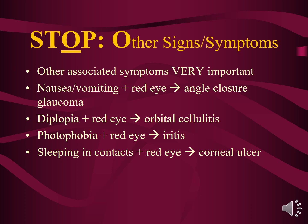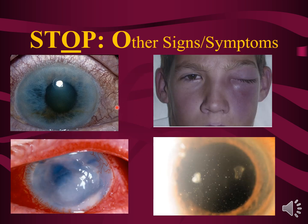The third item is other signs and symptoms. Nausea and vomiting classically suggest angle closure glaucoma — the patient is throwing up and their eye is red. Double vision with a red eye is consistent with orbital cellulitis. Sensitivity to light with a red eye suggests inflammation of the internal structures of the eye. Sleeping in contacts with a red eye should make you think of a corneal ulcer, which can also present with discharge, especially in the morning.